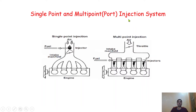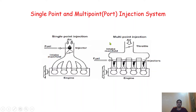The very important component of an injection system is called the injector. Here we are going to discuss two basic types of injection systems: one is the single point injection system and the other is the multi-point or port injection system. We have diagrams of both — the left diagram shows single point injection and the right side diagram shows multi-point or port injection.